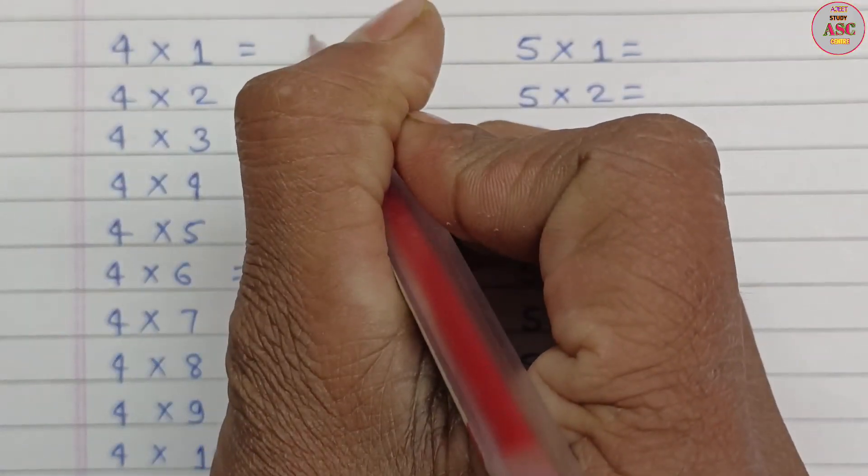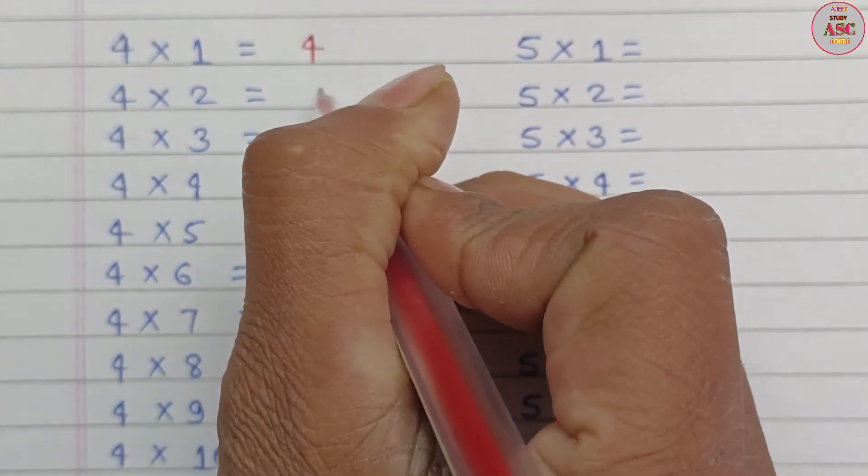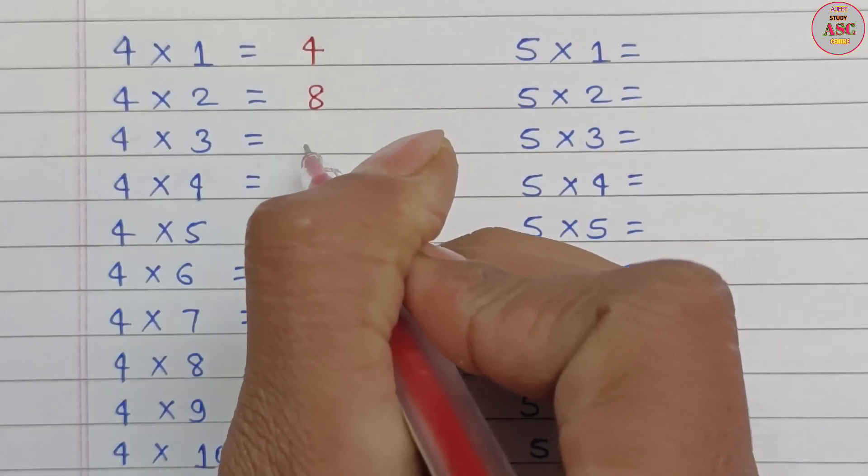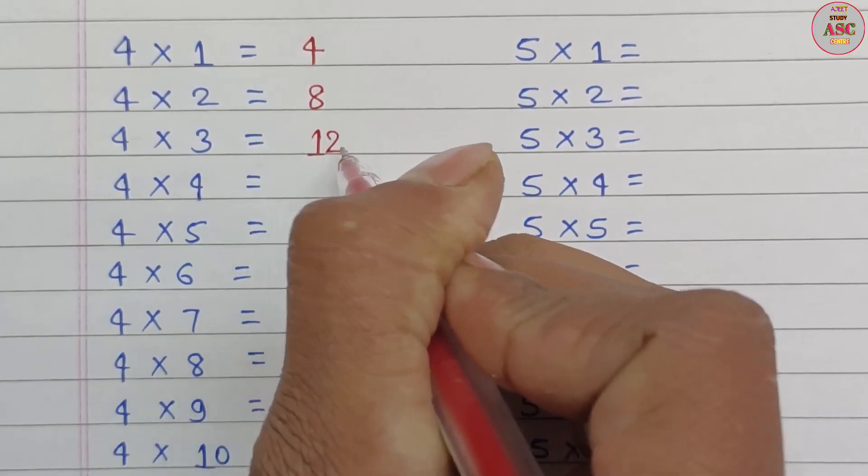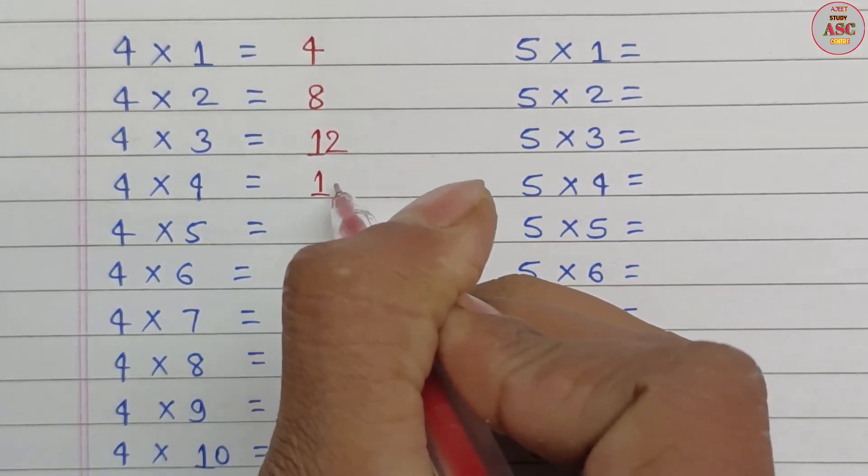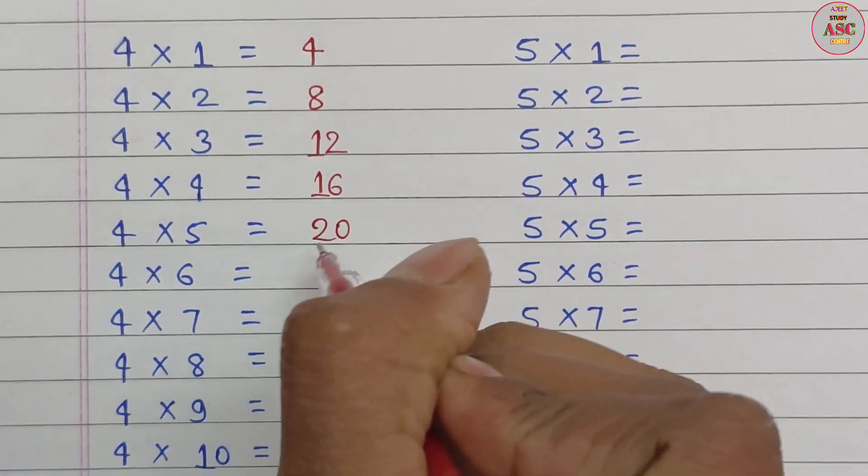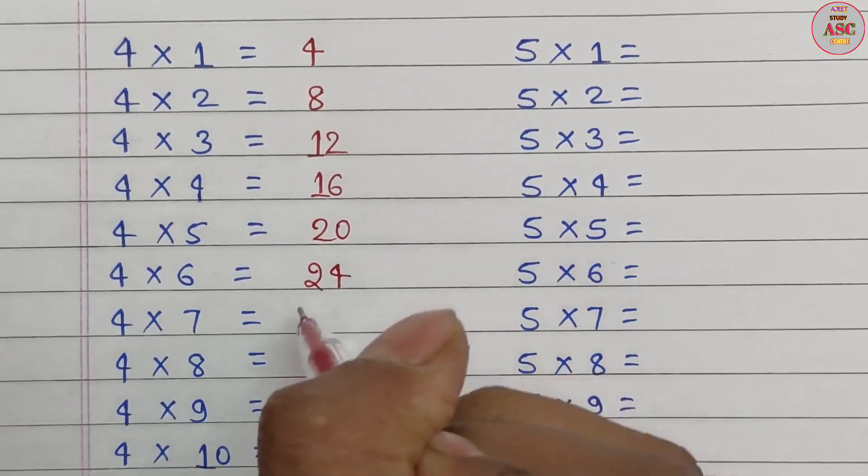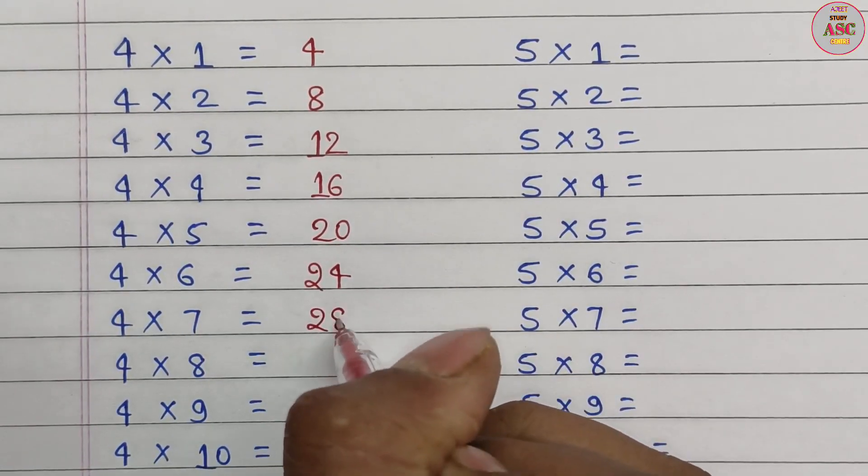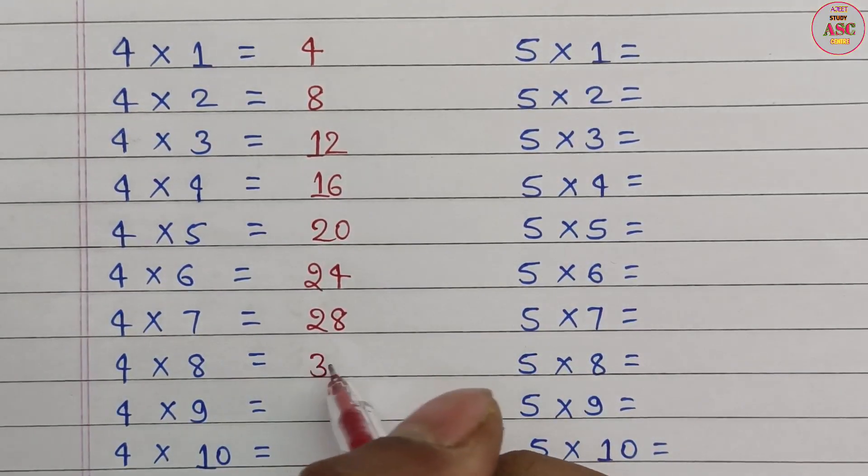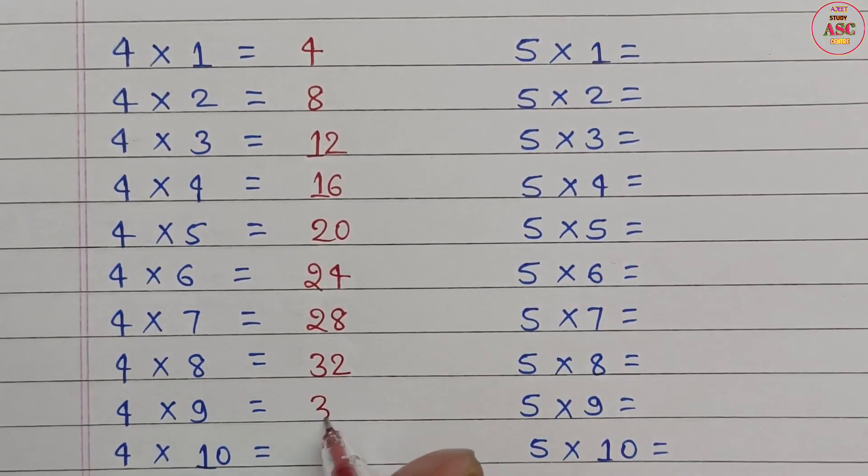4 times 1 equals 4. 4 times 2 equals 8. 4 times 3 equals 12. 4 times 4 equals 16. 4 times 5 equals 20. 4 times 6 equals 24. 4 times 7 equals 28. 4 times 8 equals 32. 4 times 9 equals 36. 4 times 10 equals 40.